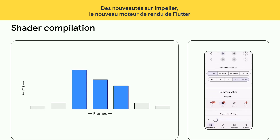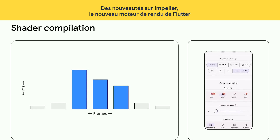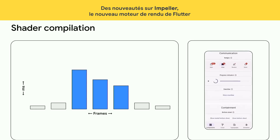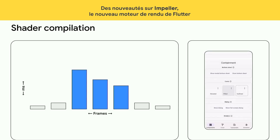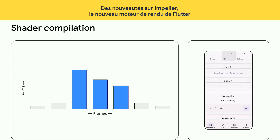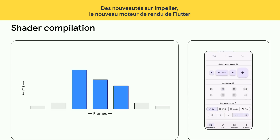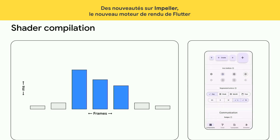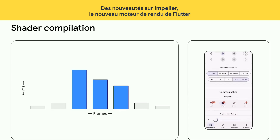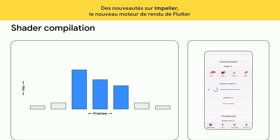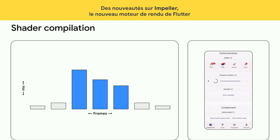Flutter's original rendering engine, Skia, when it sees a complex series of draw operations, actually compiles a shader to run on the GPU. This can make the app really fast overall, but it causes apps to skip frames when they first need to draw a complex scene like you see here.